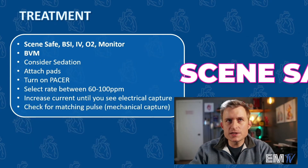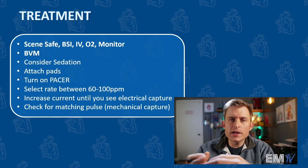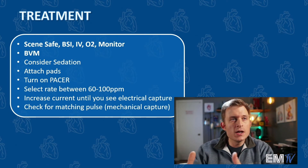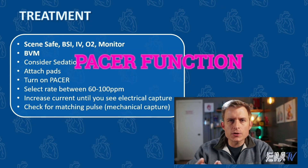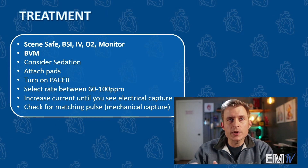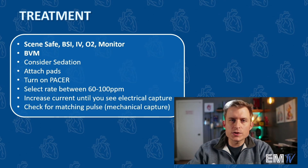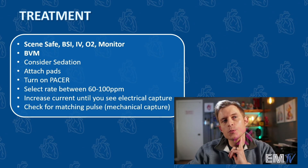Begin regurgitating the mantra: scene-safe BSI IV O2 monitor. Next, because your patient isn't ventilating adequately, we're going to BVM them with 100% oxygen. We're going to consider sedation — obviously they're unresponsive, so they're sedated enough. We're going to attach our pads, turn on the pacer function on our LifePak, then set the rate to anywhere between 60 and 100 pulses per minute on the pacer, and then increase the milliamp output until we see electrical capture and mechanical capture. Mechanical capture is confirmed with the presence of a carotid pulse.